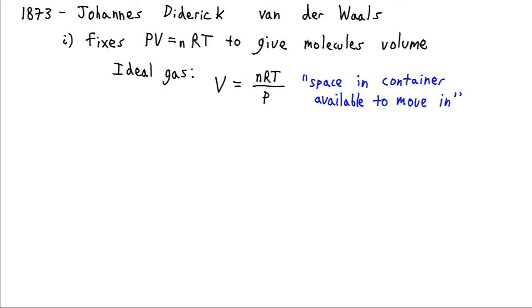Now the ideal gas equation, if we solve for volume, we have V = nRT over P. And this V here represents the space which is available in the container for molecules to move around. If we cut that space in half, molecules would have half as long to complete their journey before they collide with the walls of the container. So we would have twice as many collisions and that would double the pressure. So this volume is inversely proportional to the pressure.